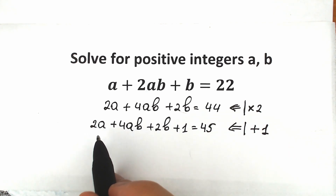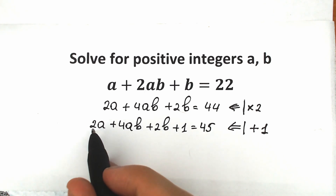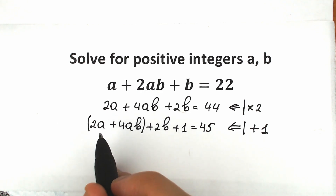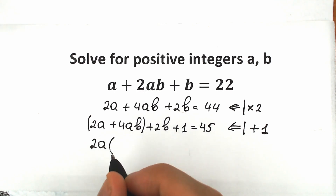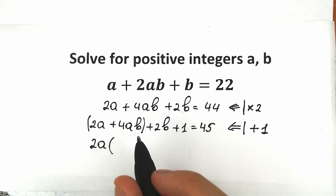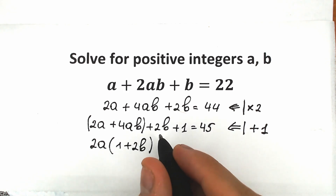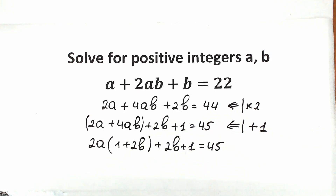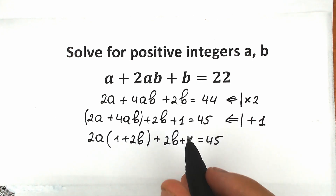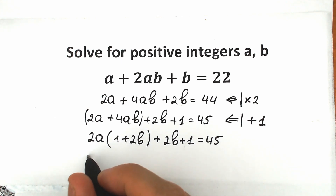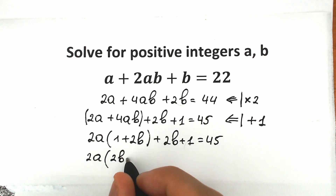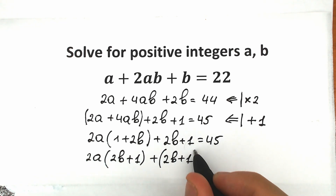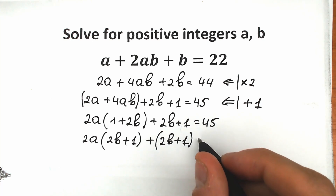Right here let's look at this expression. We have 2a plus 4ab — let's factor from this expression inside parentheses. It changes nothing because we have all the time addition. Let's factor 2a: inside parentheses we have 1 plus 2b, so 2a times (1 plus 2b). And we have plus 2b plus 1 equal to 45. Obviously 1 plus 2b is the same as 2b plus 1, so we have 2a times (2b plus 1) plus (2b plus 1) equal to 45.